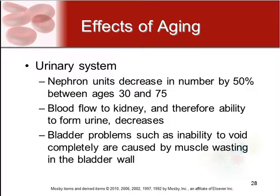For the urinary system, the nephron units located in the kidneys decrease by 50% between the ages of 30 and 75. This changes how blood filters through the kidneys. Blood flow to the kidneys affects the ability to form urine, which causes urine formation to decrease as somebody ages.